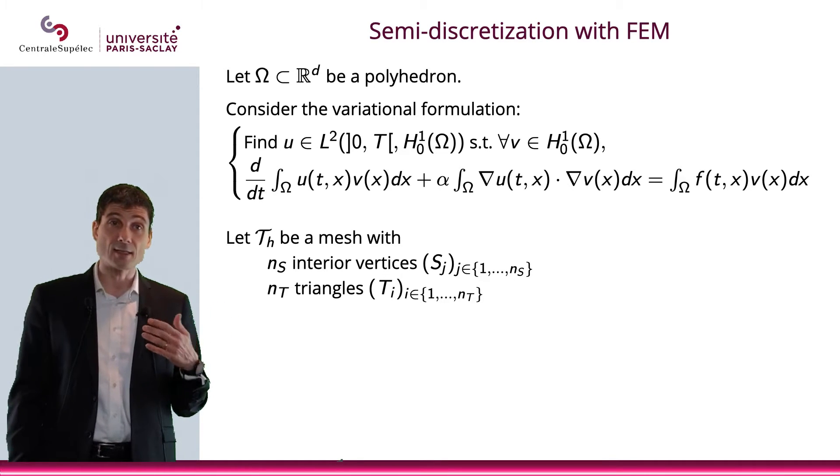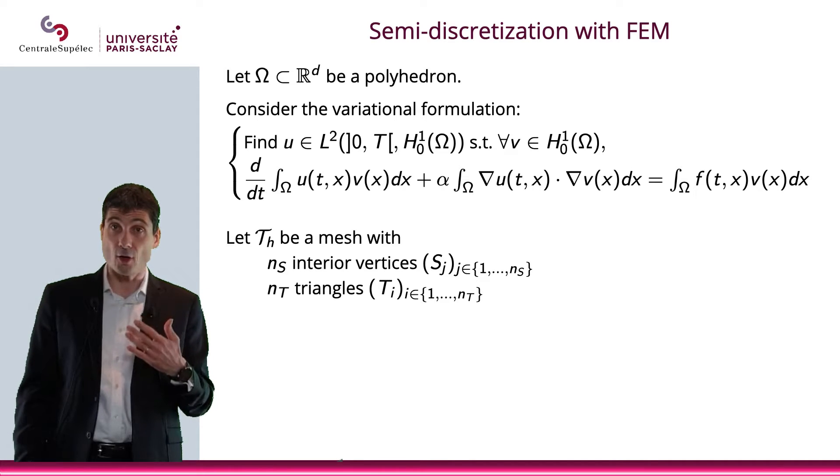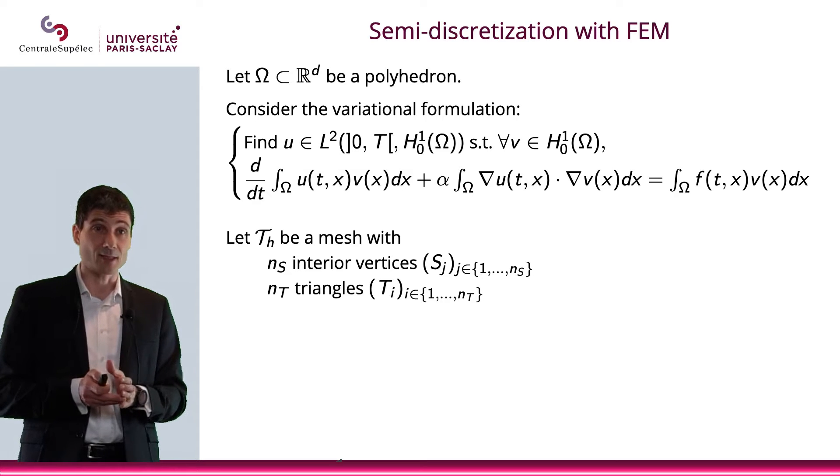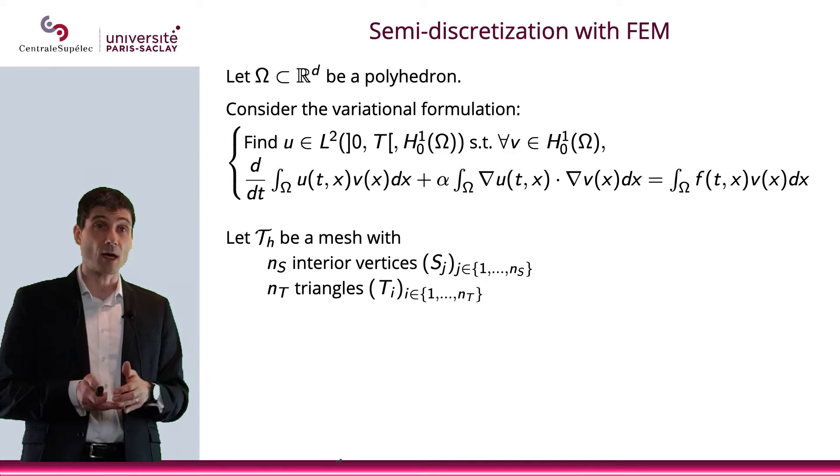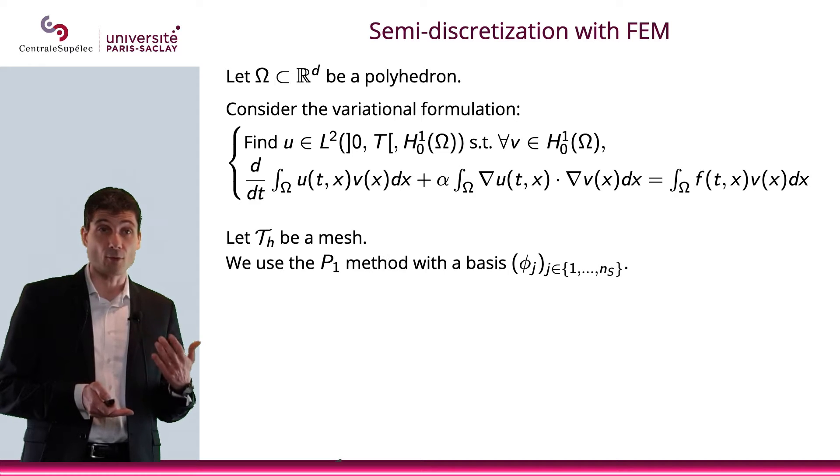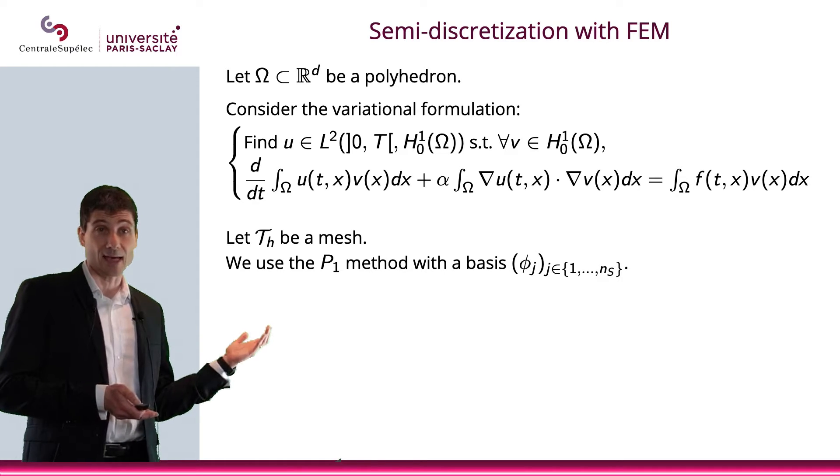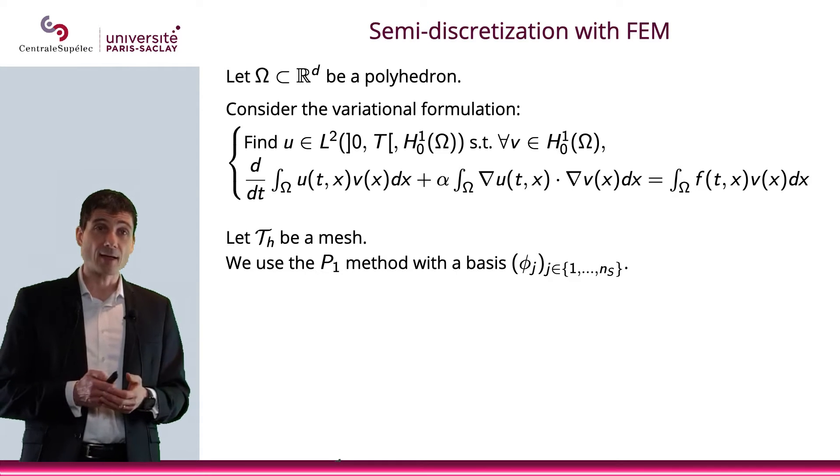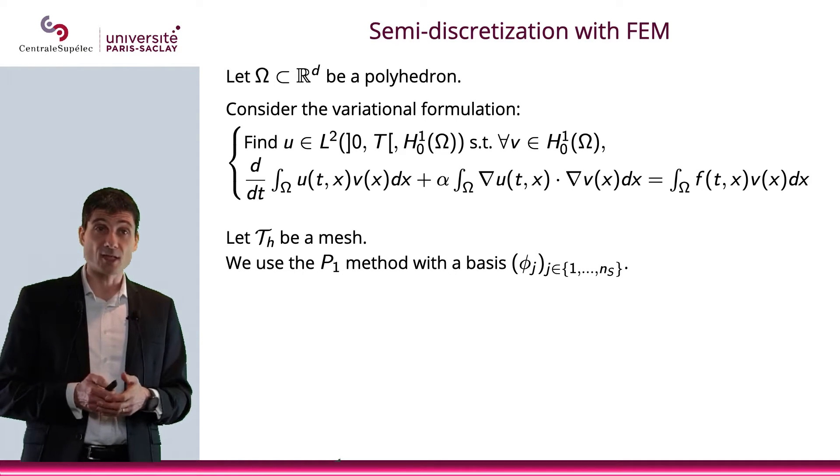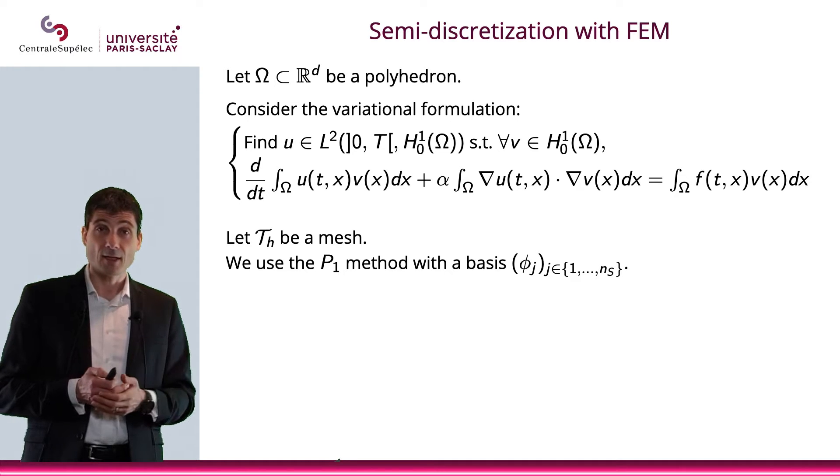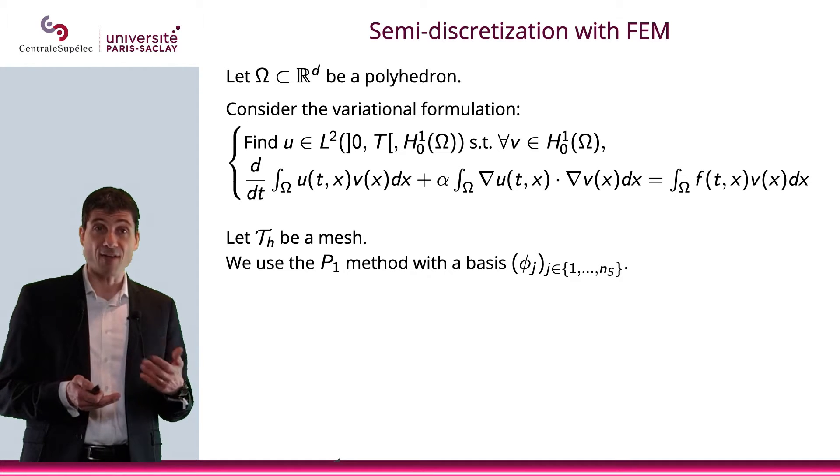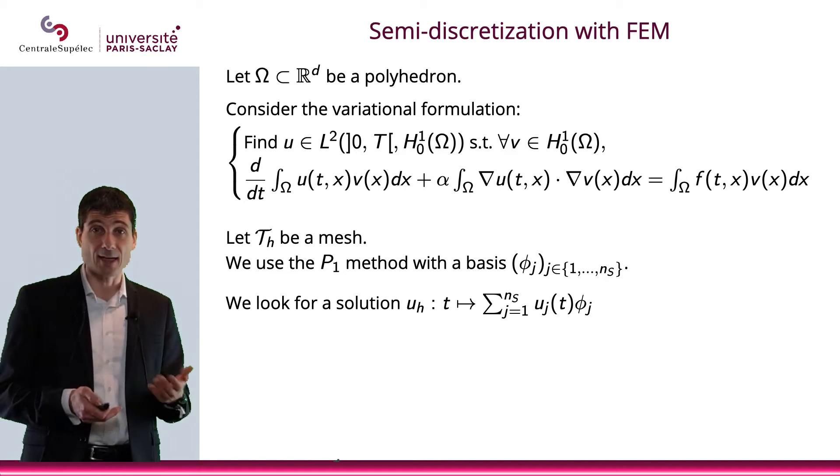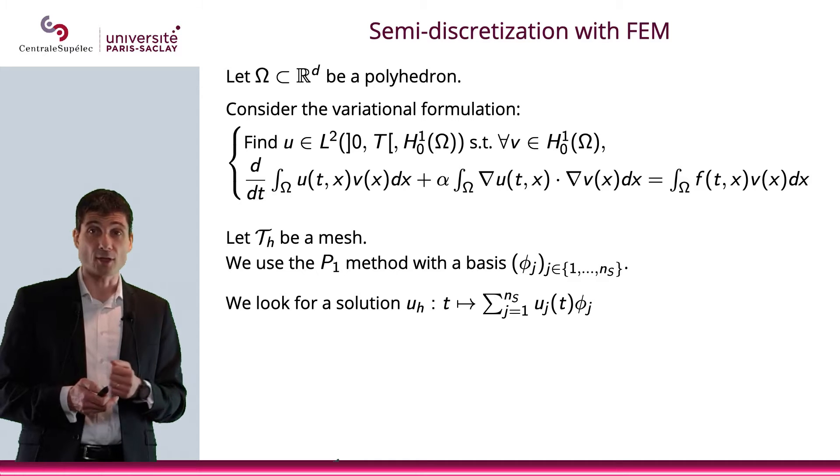Now what we're going to do is consider a mesh of our space omega. The space that we consider, we will have some integral of vertices, we'll have a certain number of triangles. n_s will be basically the number of vertices we'll have. What we'll do is use a P1 finite element method, and we'll have the basis φ_j, and obviously φ_j will go from 1 to n_s, n_s being the parameter we just defined.